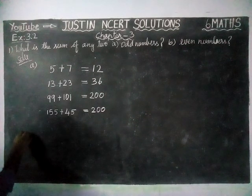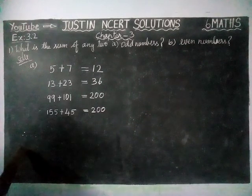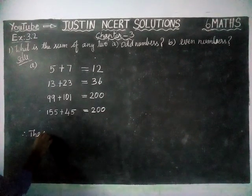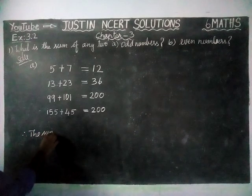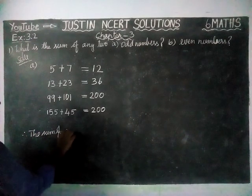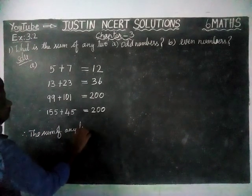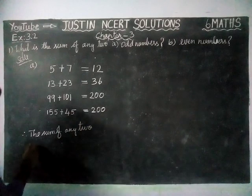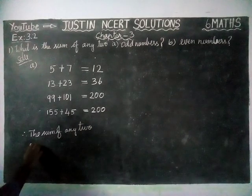Therefore, option A is correct. The sum of any two odd numbers is always an even number.